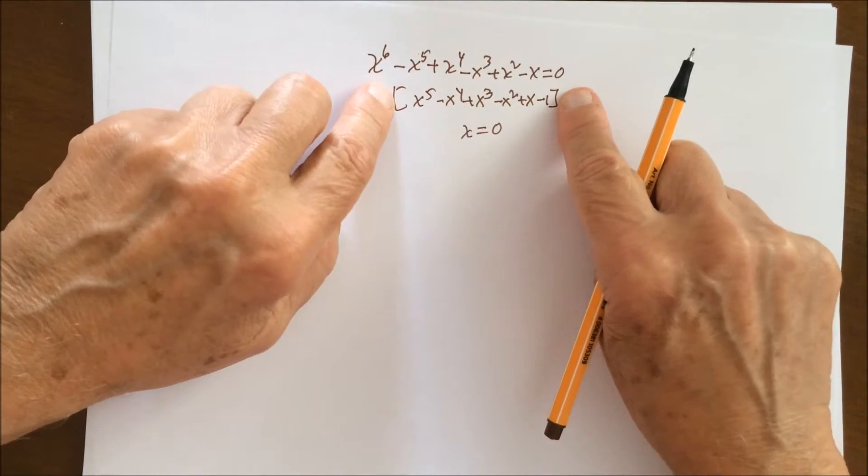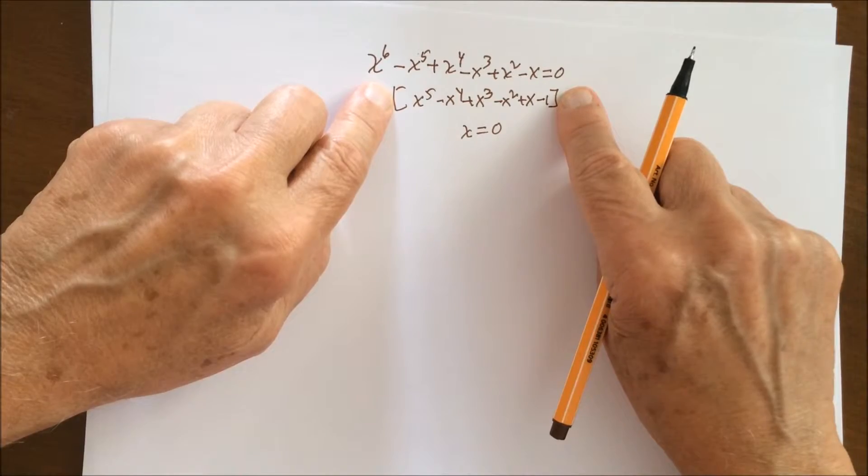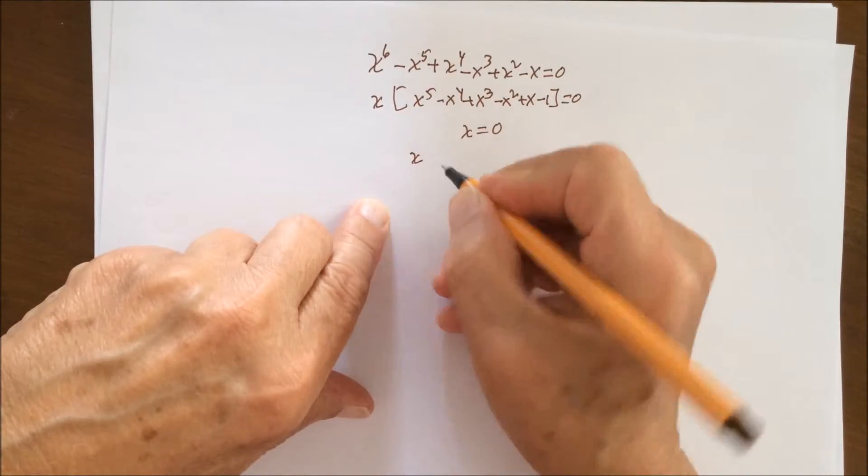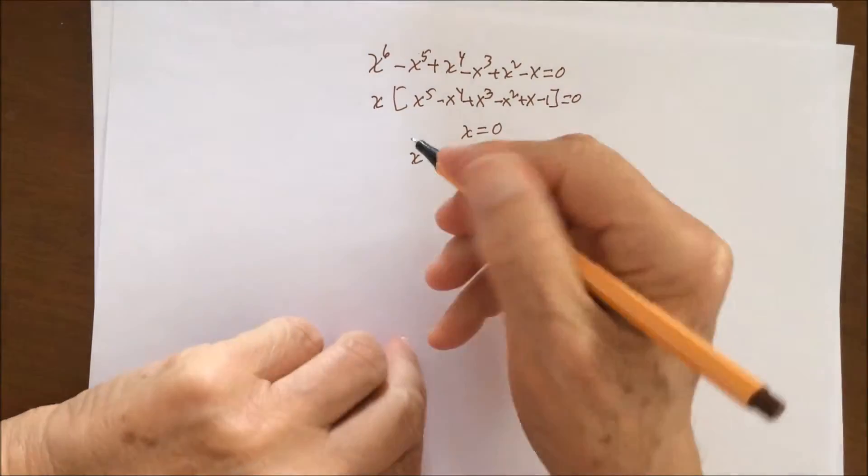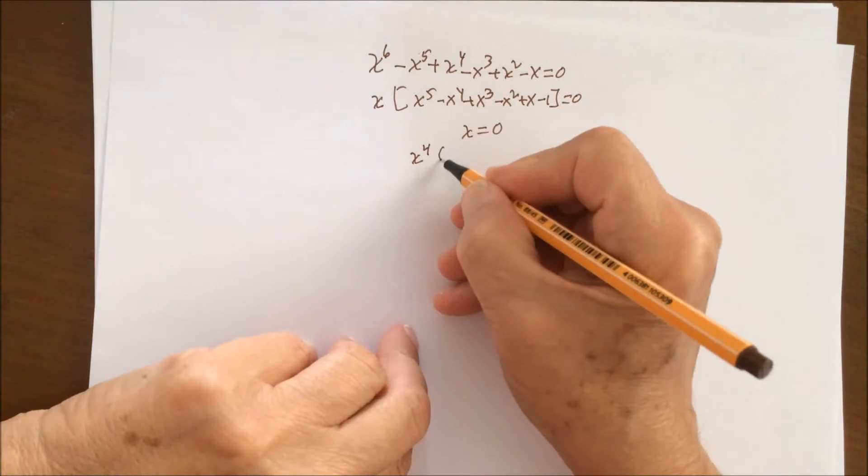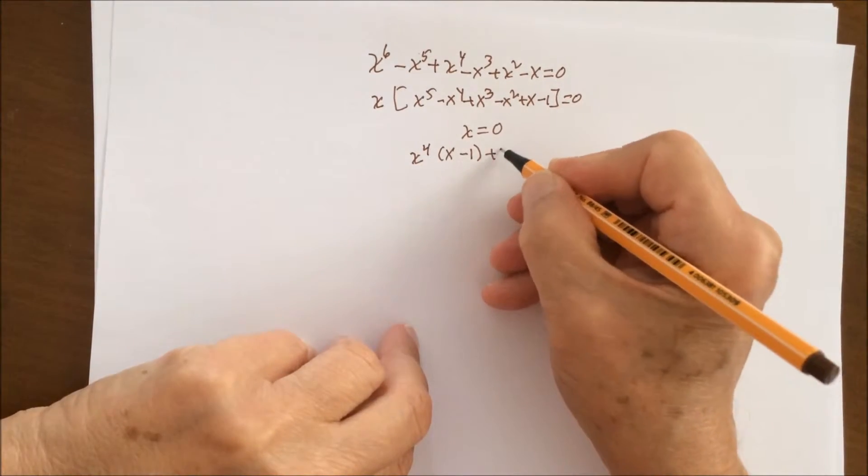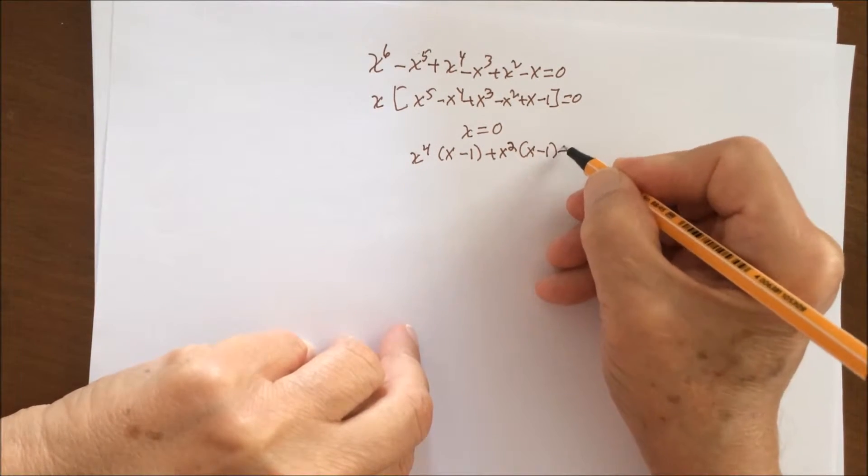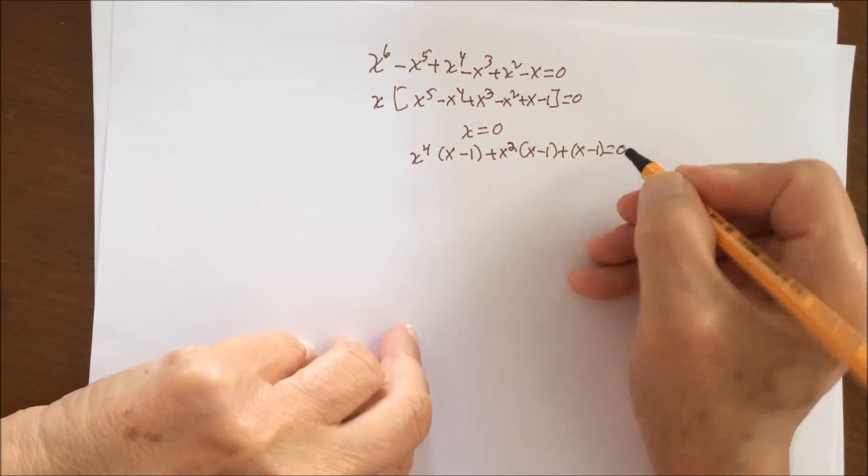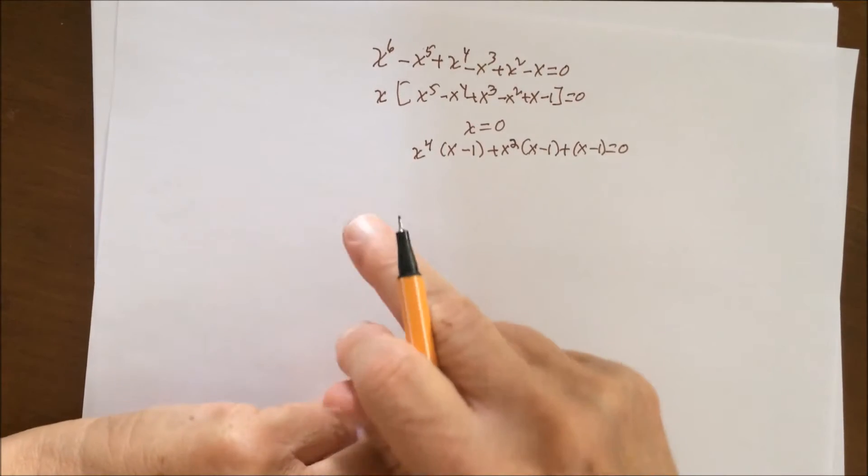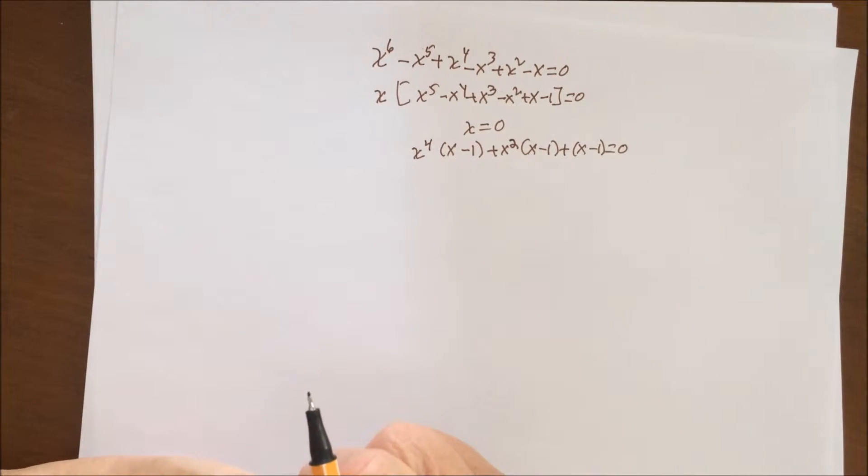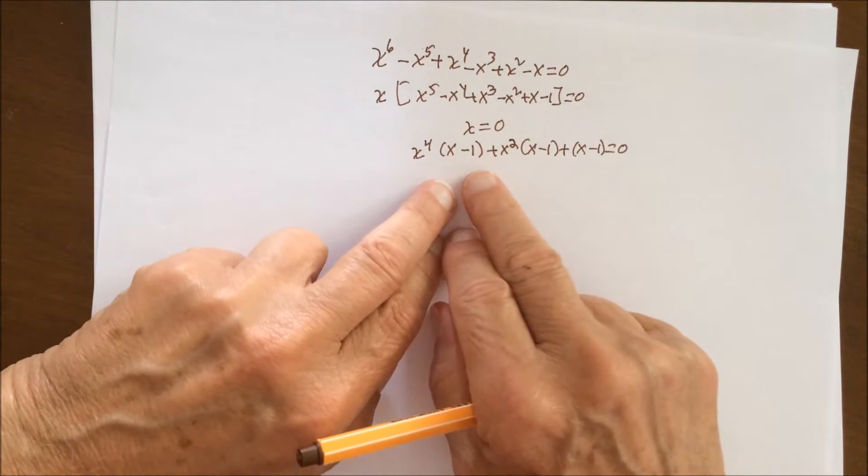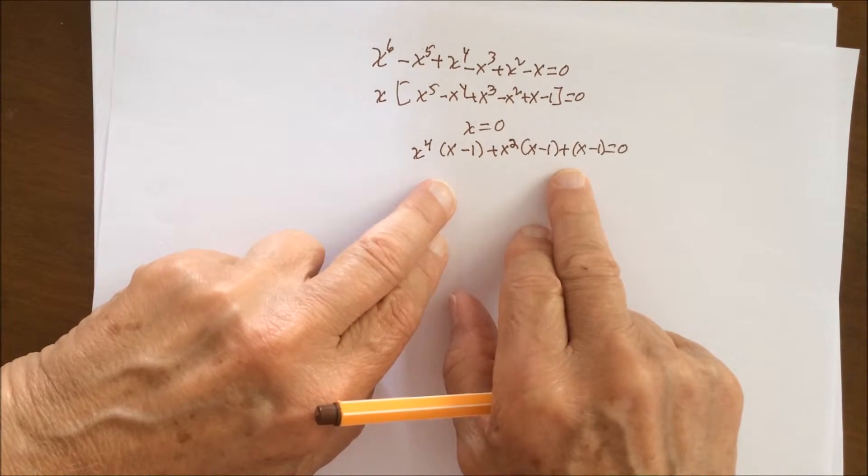Now let's consider the remaining equation, the equation that's inside the bracket. Let's factor this once again, and I'm going to factor it the following way. You see I factored out the terms inside the bracket as follows. Now factoring it this way, we see we have another factor of this polynomial, and the factor is x minus one. So let's factor this piece.